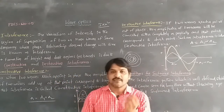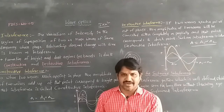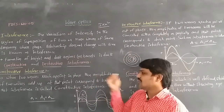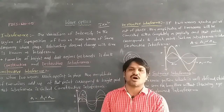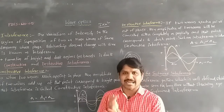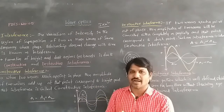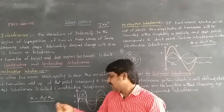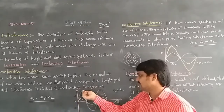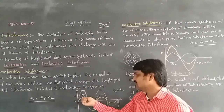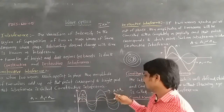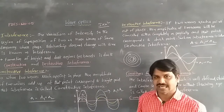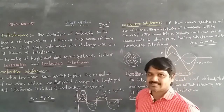Constructive interference means when two waves reach a point in phase — having the same phase difference — the amplitude of the two waves reinforce, meaning they add up. At that point of region it corresponds to a bright point. This is called constructive interference.